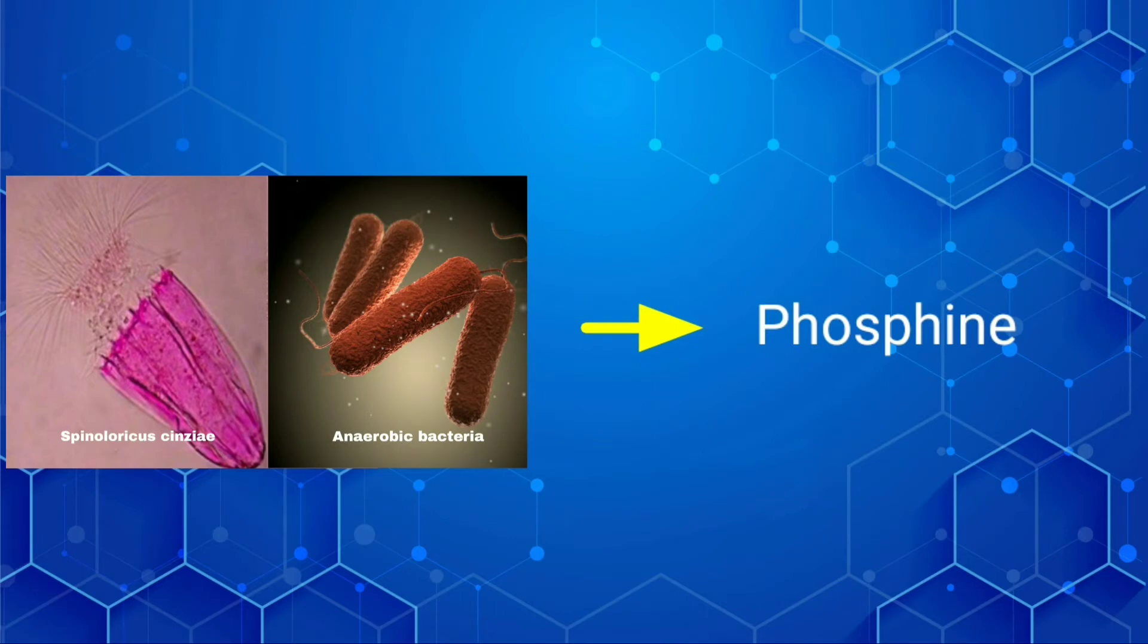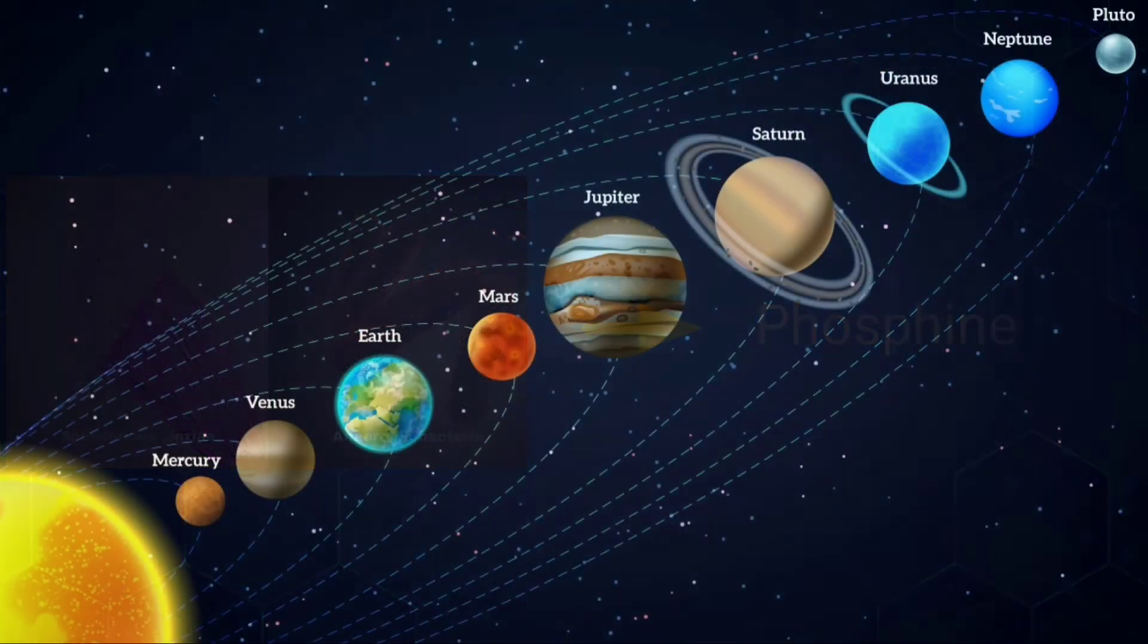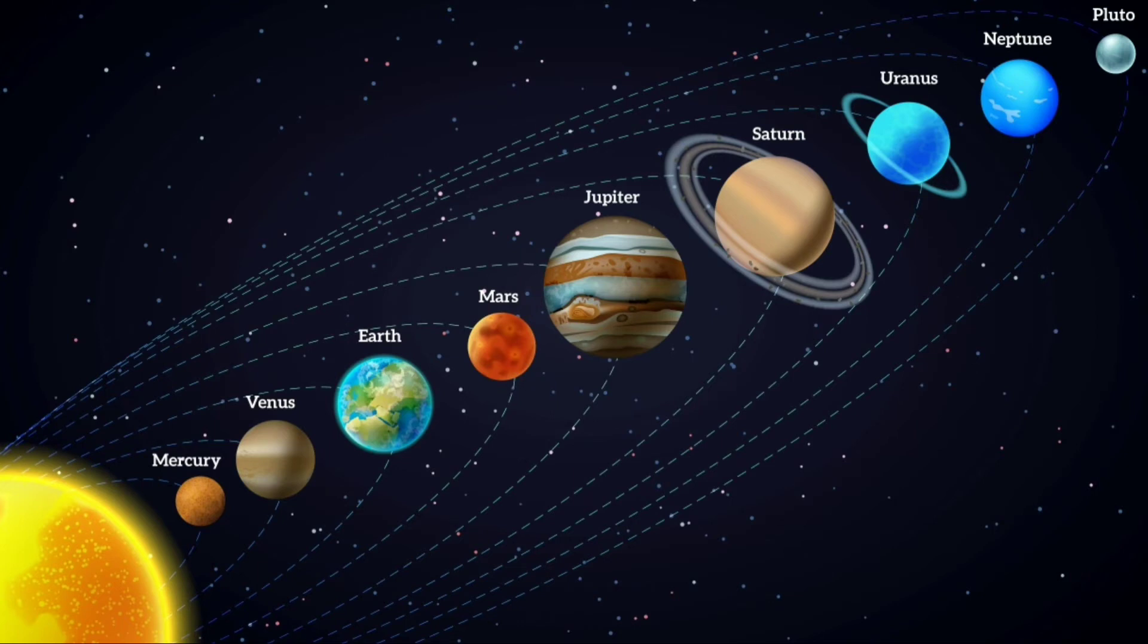And yet, scientists found no other way that could produce a big amount of phosphine in a planet like Venus without the intervention of anoxic life.